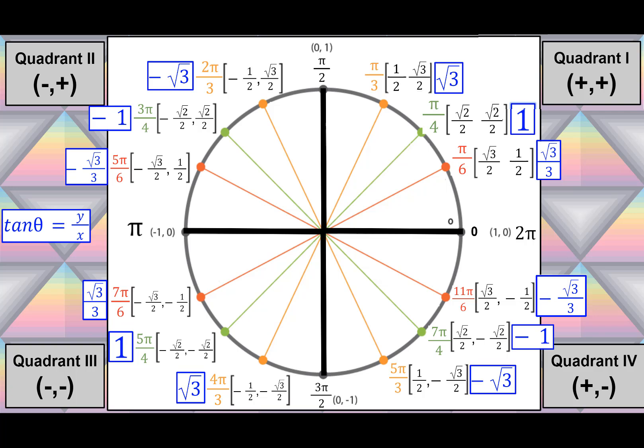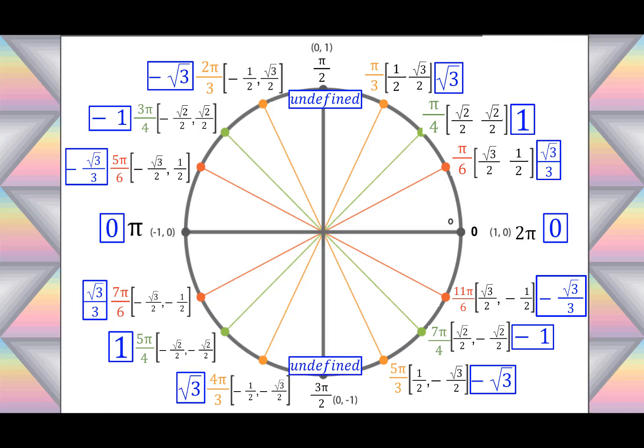Let's also fill in the tangent values on the axes. At angle 0, tan = 0/1 = 0. At angle π, tan = 0/(−1) = 0. At π/2, we're dividing 1 by 0, which is undefined. Similarly at 3π/2, dividing by 0 makes tangent undefined. Now we've completed the x-y and y/x values for the unit circle.